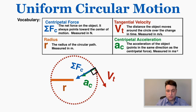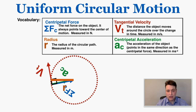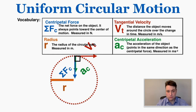This picture shows how these variables are related over time. As the object goes around the circle, the velocity is always pointing tangent to the circular path, and the net force and acceleration are always pointing toward the center of the path.